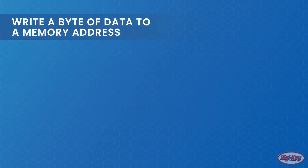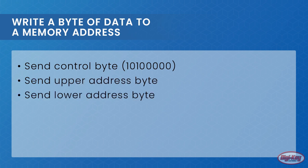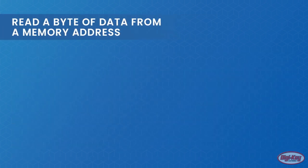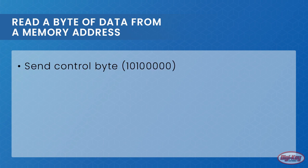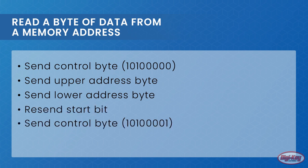This is how a byte of data is written into a memory address: send the control byte, which in this case would be 10100000; send the upper address byte; send the lower address byte; send the data byte; and then end. And this is how you read data from a memory address: send the control byte, which would be 10100000; send the upper address byte; send the lower address byte; resend the start bit; send the control byte, which would be 10100001; and then read the byte and end.